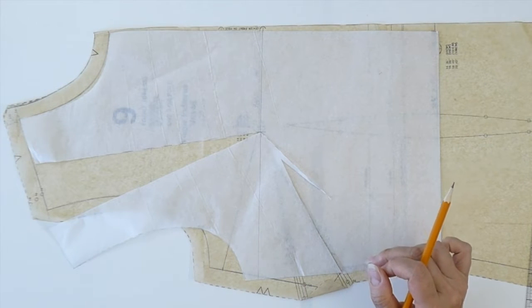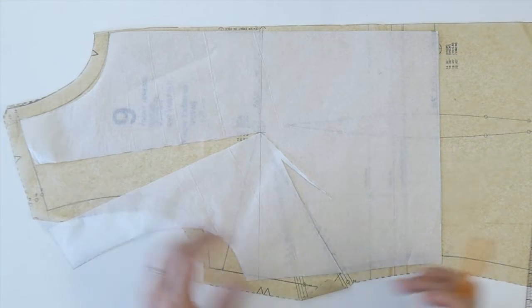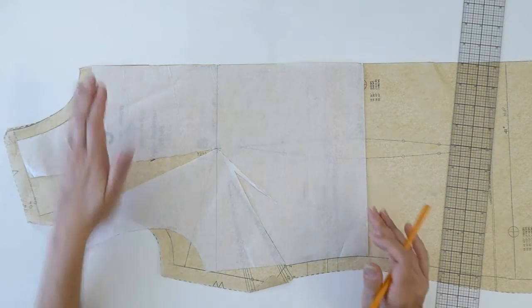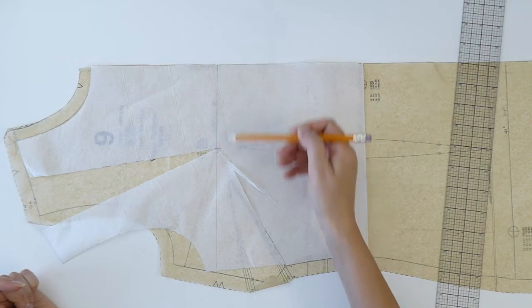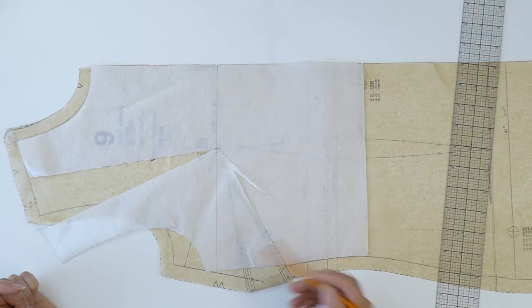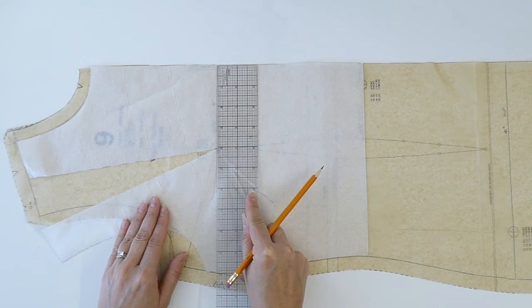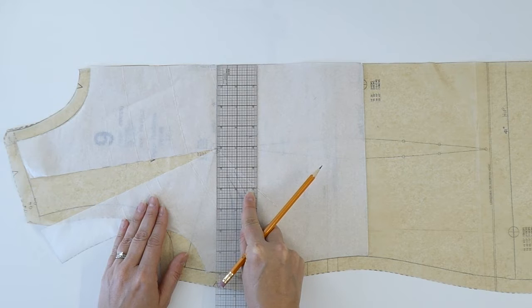So closing my bust dart is going to automatically move that bust dart out and away. And what you're going to see here is that as soon as my bust dart is up here, my bust line can be drawn straight. So I can just again do that same principle where I draw my bust line straight across perpendicular from center front. So you can see that here.